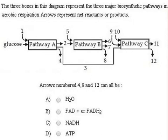In this flowchart of aerobic respiration, three major biosynthetic pathways are mentioned. Let us take them one by one. Pathway A is glycolysis, the first step where glucose is converted into pyruvic acid.